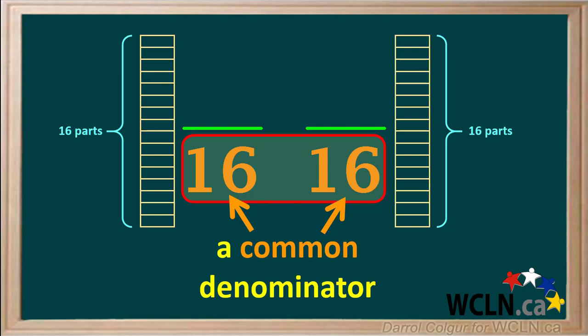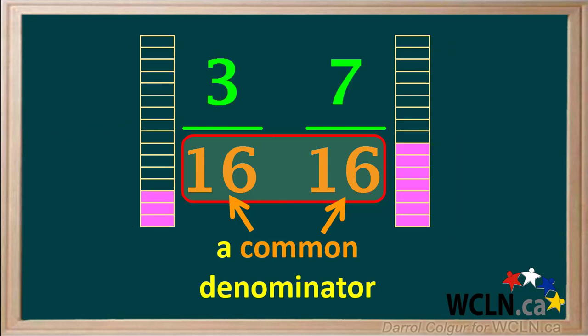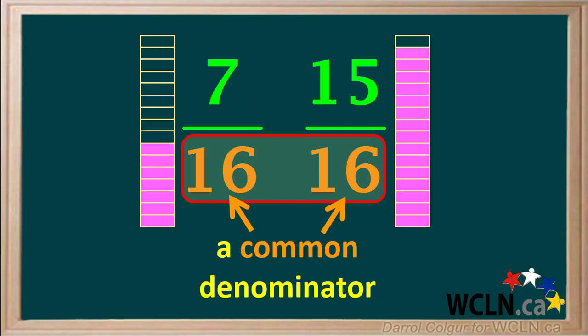Because they have a common denominator, it's easy to compare fractions based on these. For example, here are 3 sixteenths and 7 sixteenths. We can clearly see how much larger the fraction 7 sixteenths is than 3 sixteenths, and we can also clearly see how much larger the fraction 15 sixteenths is than 7 sixteenths.